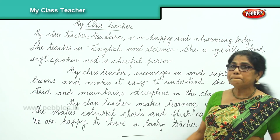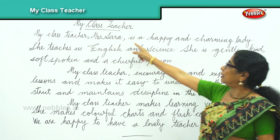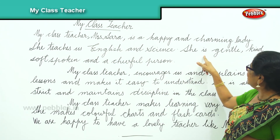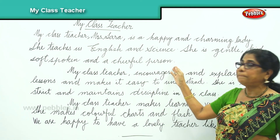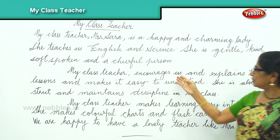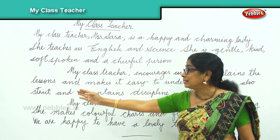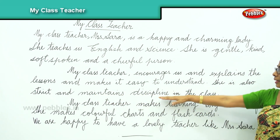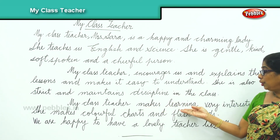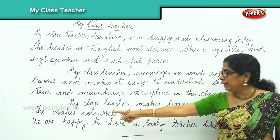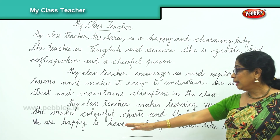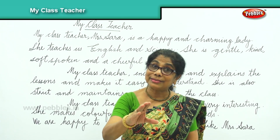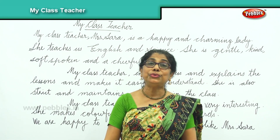Let's read through what we have written: My class teacher Mrs. Sarah is a happy and charming lady. She teaches us English and science. She is gentle, kind, soft-spoken, and a cheerful person. My class teacher encourages us and explains the lessons and makes them easy to understand. She is also strict and maintains discipline in the class. My class teacher makes learning very interesting by making colorful charts and flashcards. We are happy to have such a lovely teacher like Mrs. Sarah. Write short, correct sentences and your teacher will give you nice marks.